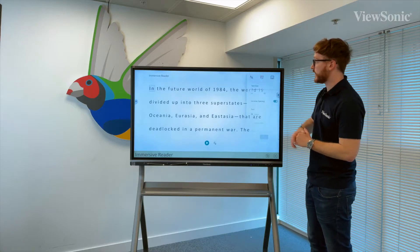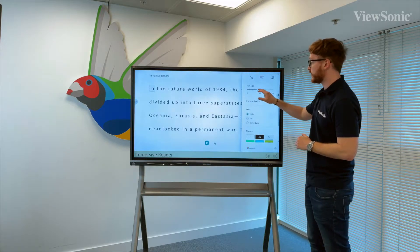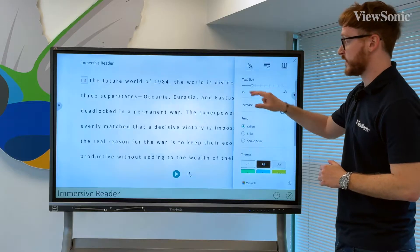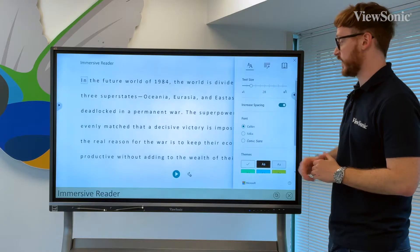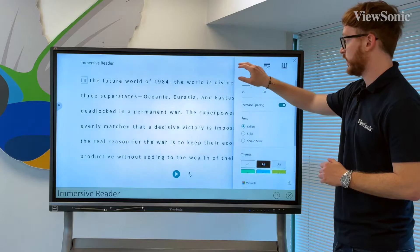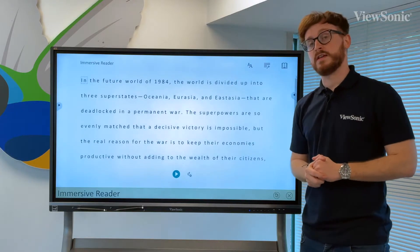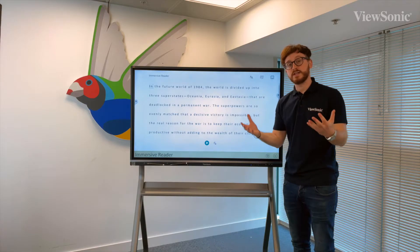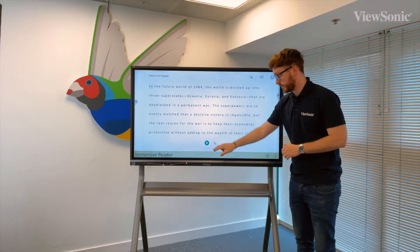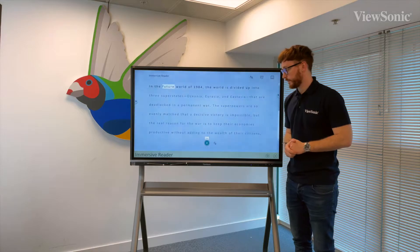From here, we can change our preferences. For example, if you want to change the size smaller, we can do that. We can also get the Immersive Reader to read the text out to us — for example, the text from the future world of 1984.